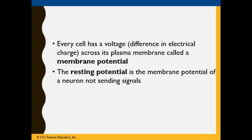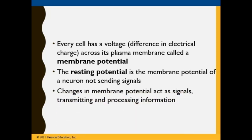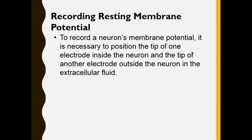When the neuron is resting and not yet doing its job, we have what is called the resting potential or resting membrane potential. That is the voltage of a neuron not sending signals. Changes in membrane potential act as signals for transmitting and processing information. To record the membrane potential, we need to position the tip of an electrode.